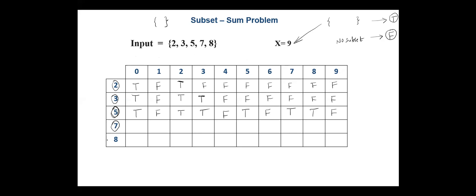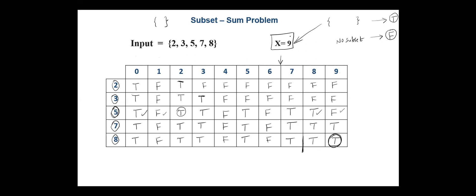Next, we include integer 7. Up to column 6 we copy from the above: true, false, true, false, true, false. For column 7: 7 minus 7 is 0; above has true, so true. Column 8: above has true, so we copy true. Column 9: above has false, but 9 minus 7 is 2 and above row column 2 has true, so true. After that, we include 8. Copying from above row up to that point, and since the relevant lookup cells are true, the final cell is true. So the final result is true, meaning we have at least one subset that sums to 9. That subset is {2, 7}.